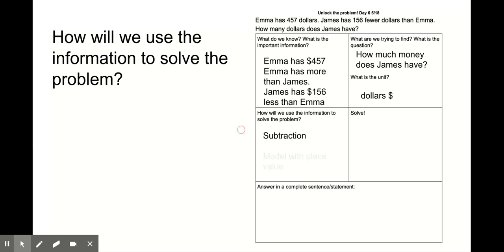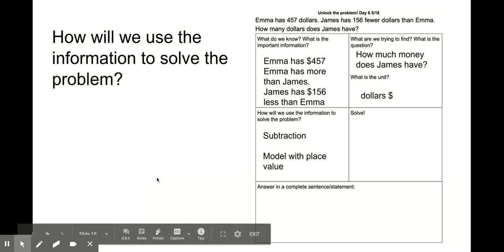I'm going to subtract by using a model with place value. So I'll use a hundreds tens ones chart to solve. If you are going to use the vertical way, then you would put vertical way right here. Do what works best for you.